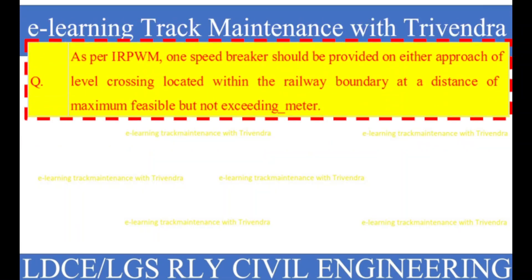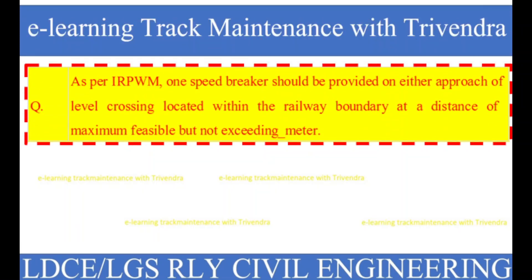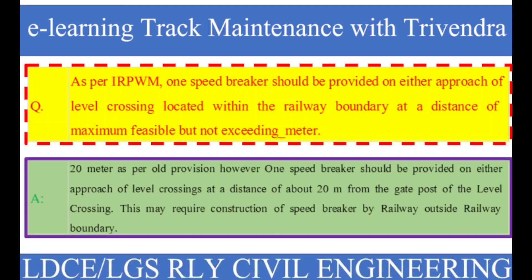Question number 66: As per IRP WM, one speed breaker should be provided on either approach of a level crossing located within the railway boundary at a distance of maximum feasible but not exceeding how many meters? The right answer is 20 meters as per the old provision. One speed breaker should be provided on either approach of level crossings at a distance of about 20 meters from the gate post, which may require construction of a speed breaker by the railway outside the railway boundary.